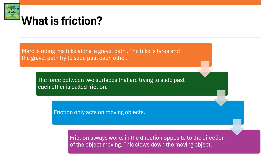What is friction? You can understand what friction is by looking at the previous example of Marcus riding his bike. The bike's tires and the gravel path try to slide past each other. The force between these two surfaces that are trying to slide past each other is called friction.